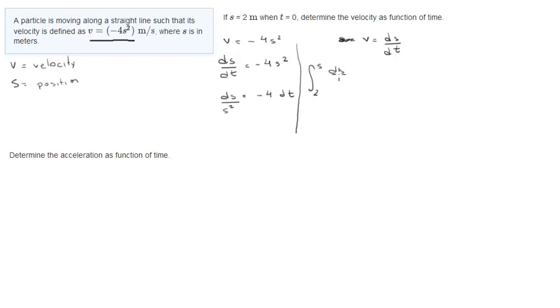So the integral of ds over s squared is equal to integral of negative 4 dt. So you get that 1 over s, that would be negative 1 over s plus 1 half, is equal to negative 4t.